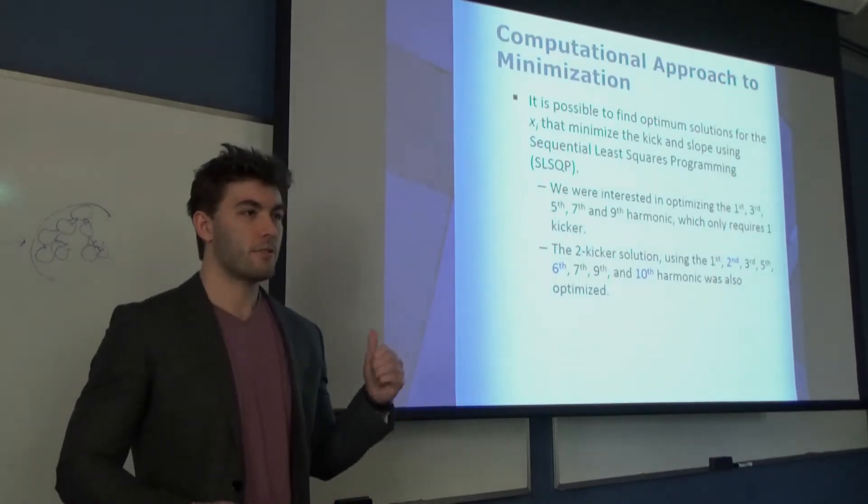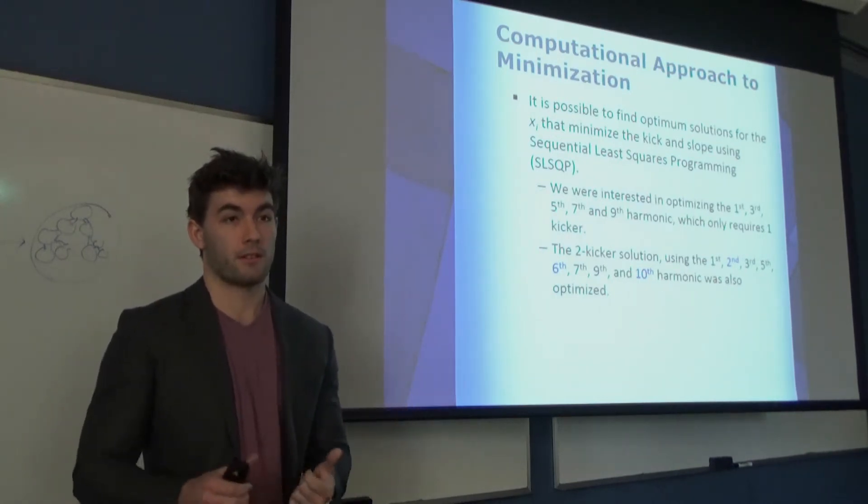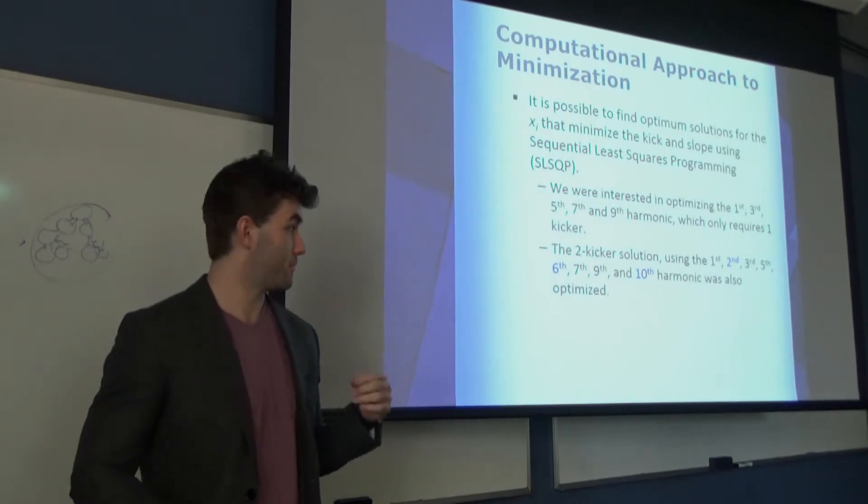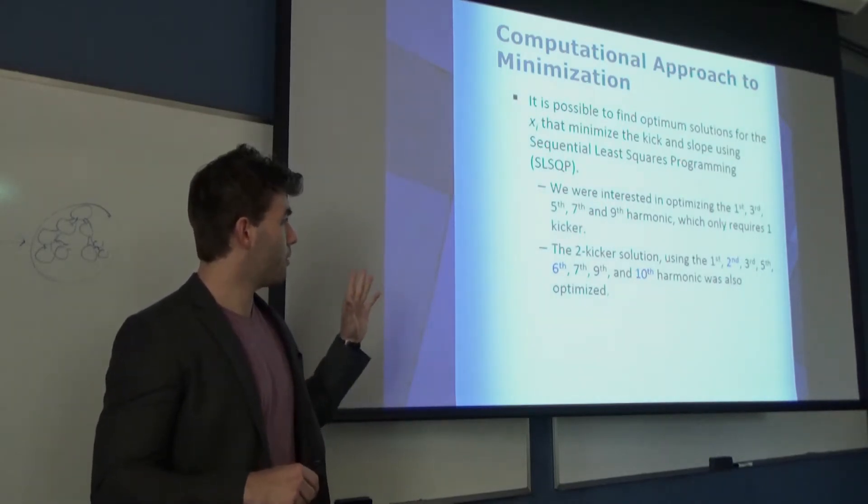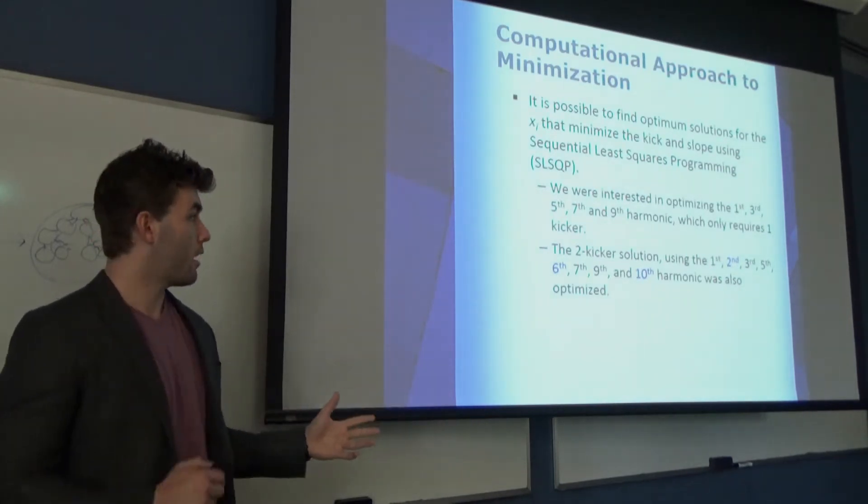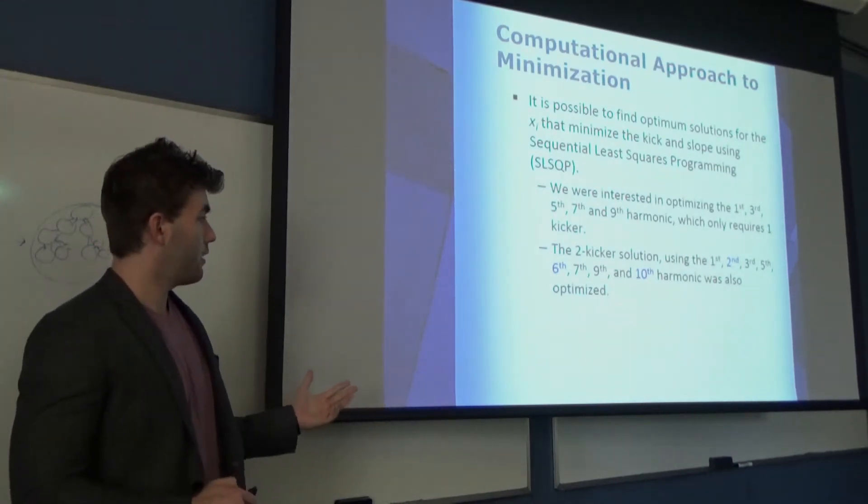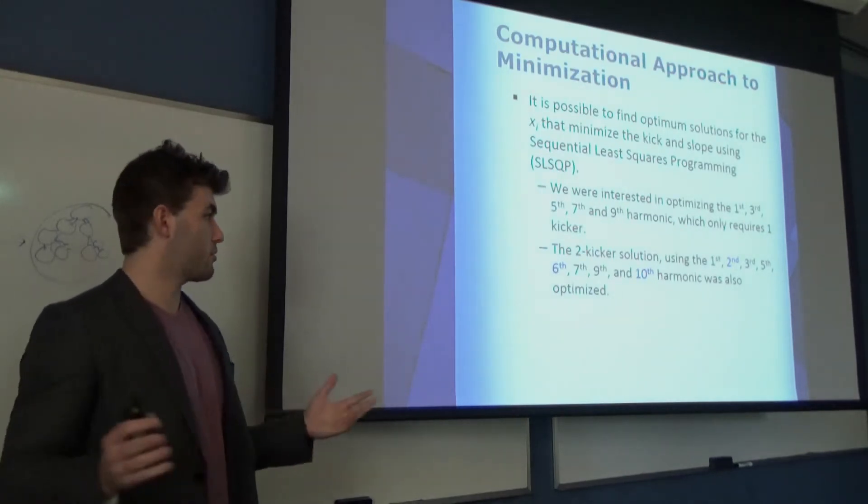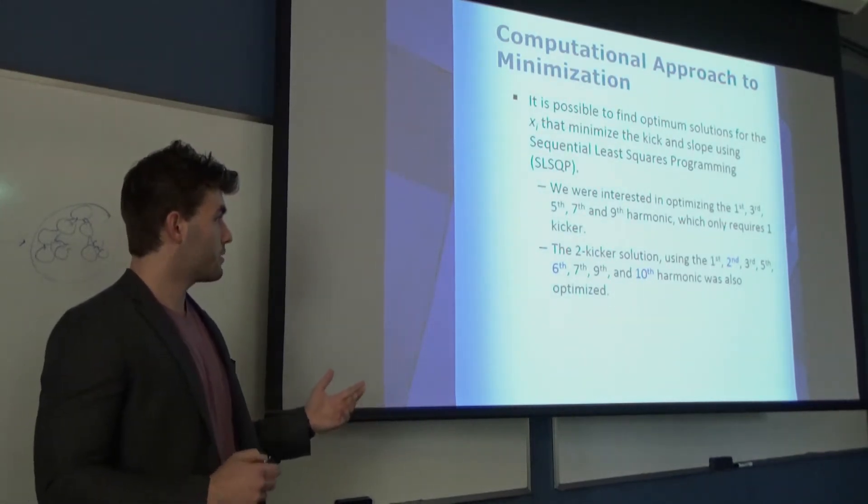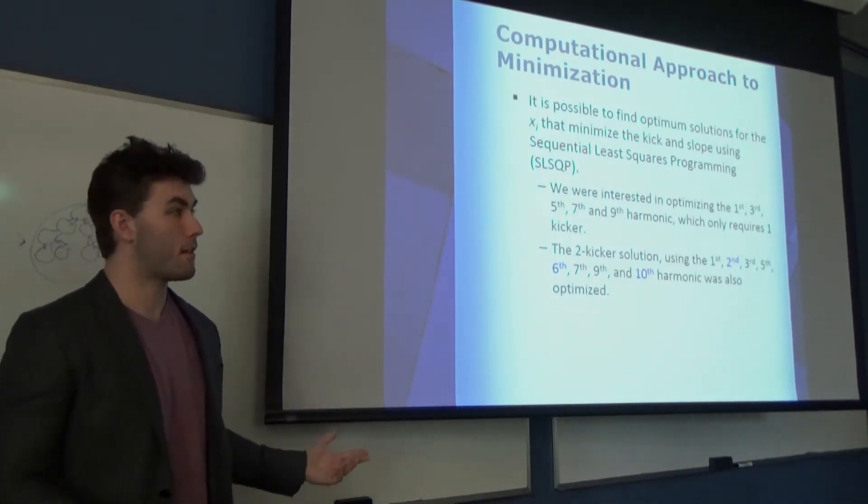I said that using one kicker you can supply the 1st, 3rd, 5th, 7th, and 9th harmonics. That requires just one kicker. If I take that as the terms that I want to optimize, how close to zero can I get with that? And just to cover all my bases, let's do the second kicker solution as well. I'm going to optimize all of these terms and see if I can get pretty close to that perfect solution.